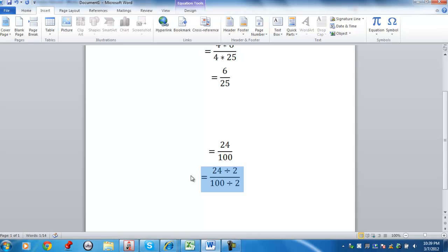And then because they're even numbers, 24 divided by 2 would be 12, 100 divided by 2 is going to be 50. Now ask yourself the question, 12 and 50 are both even numbers. So I can, in fact, divide again.